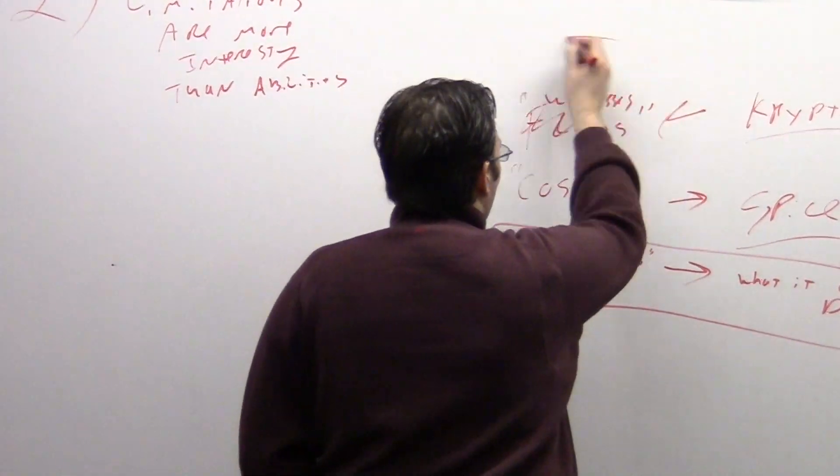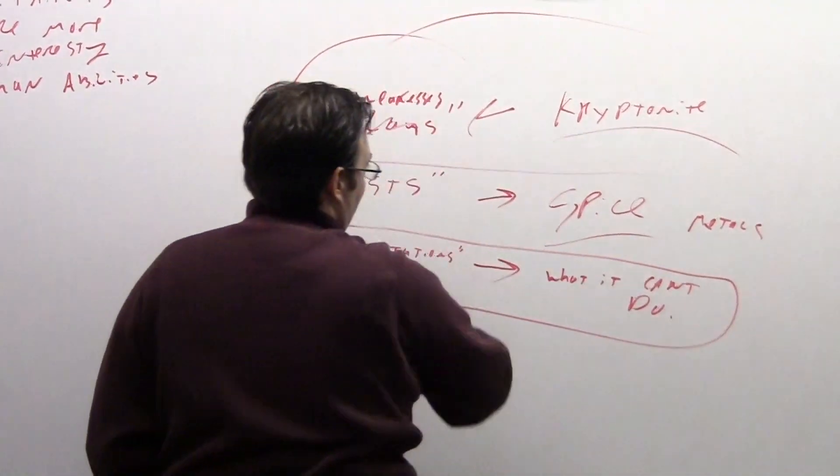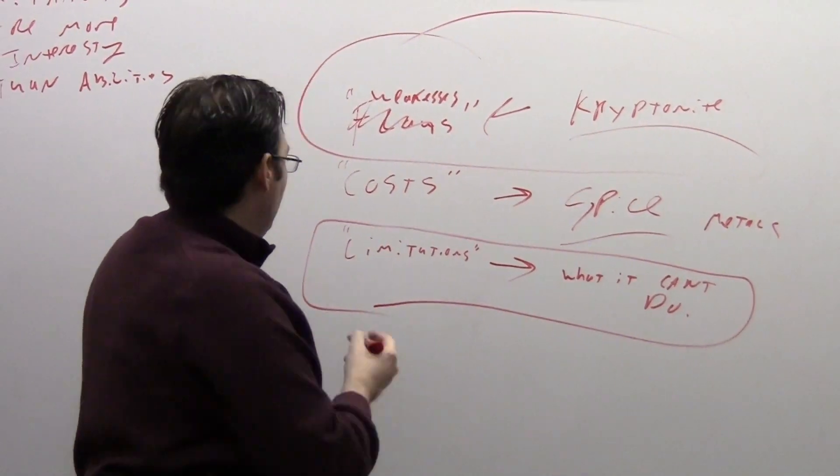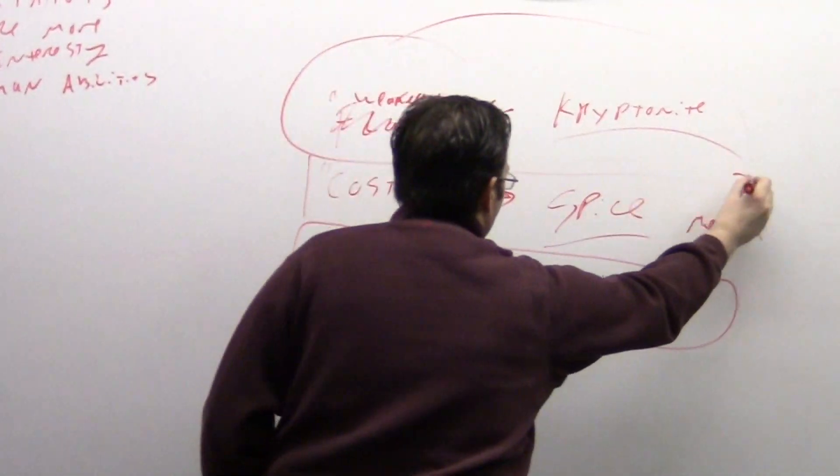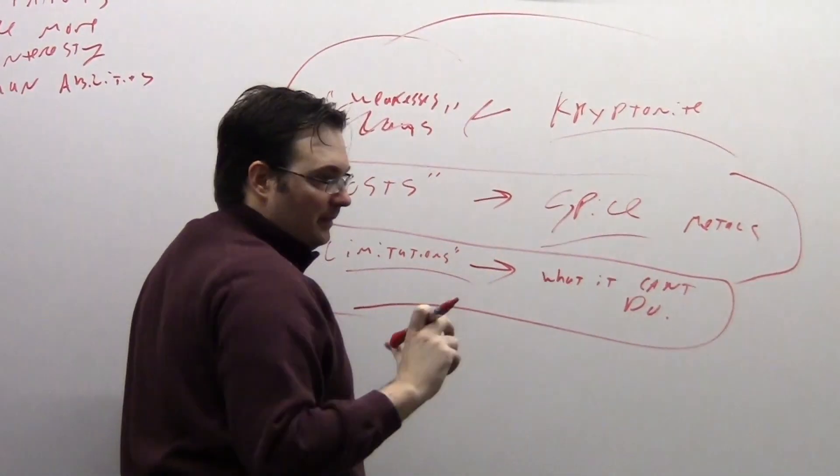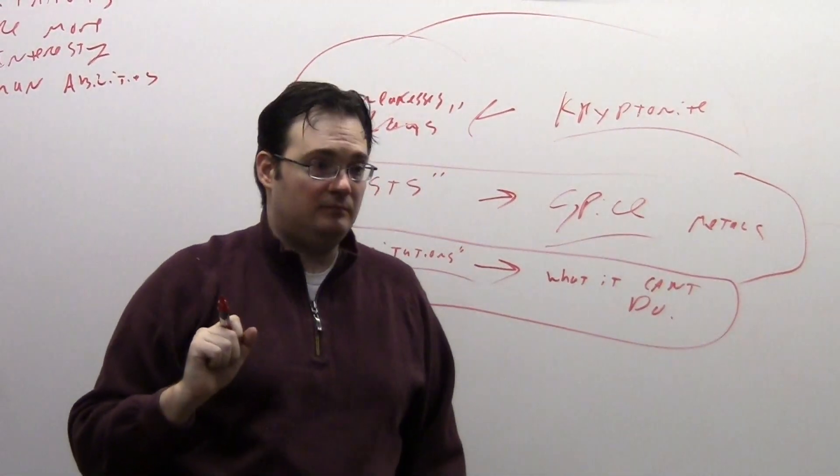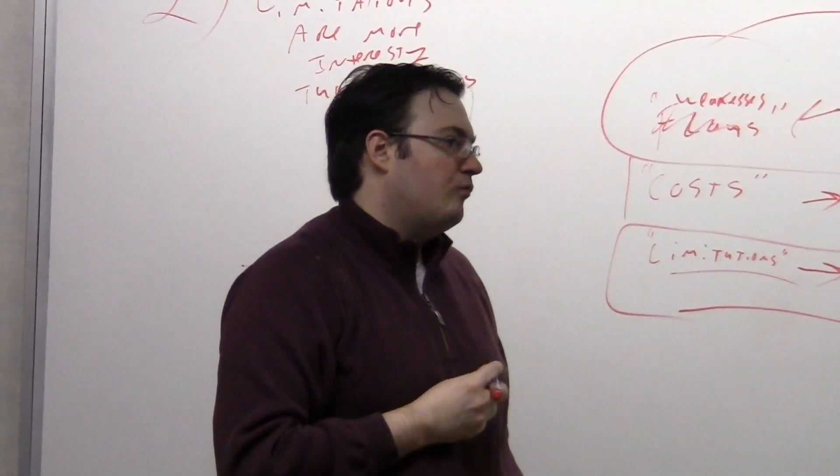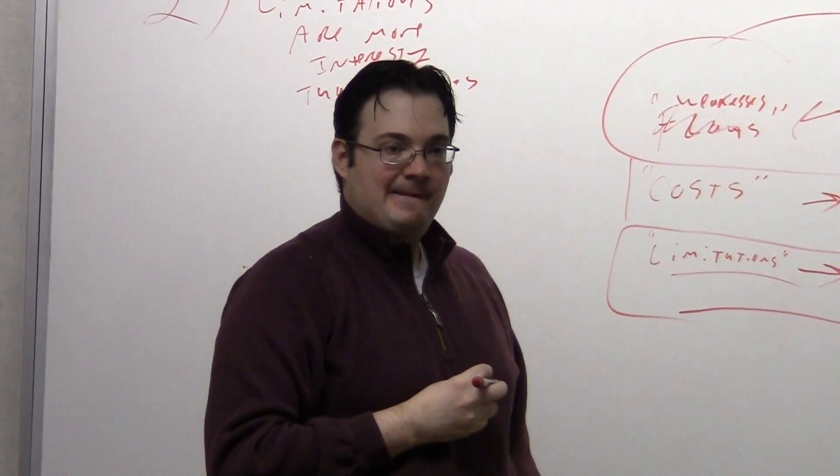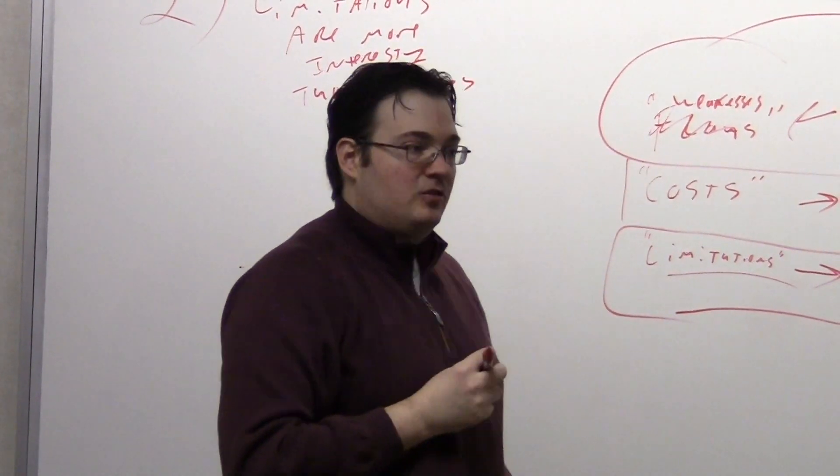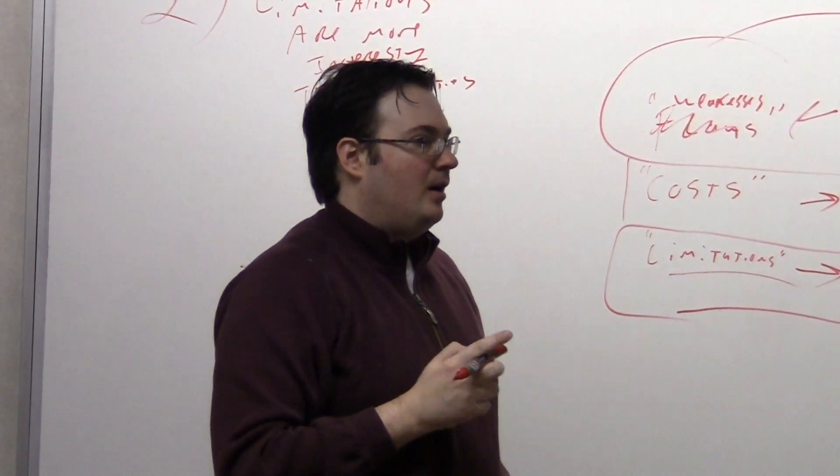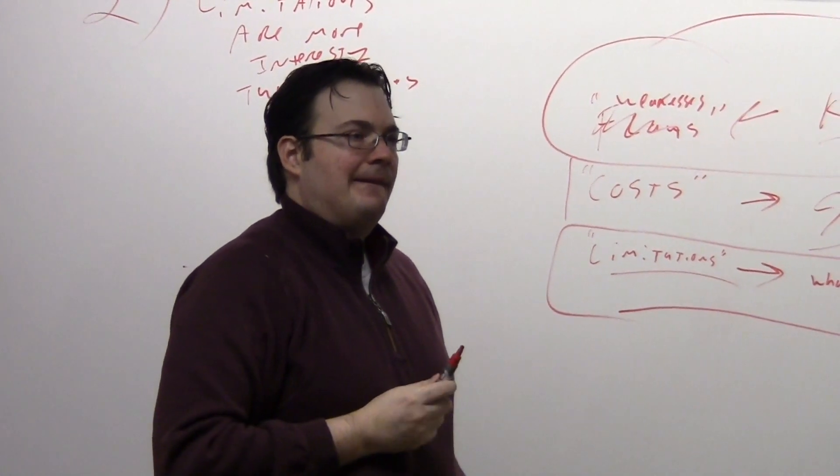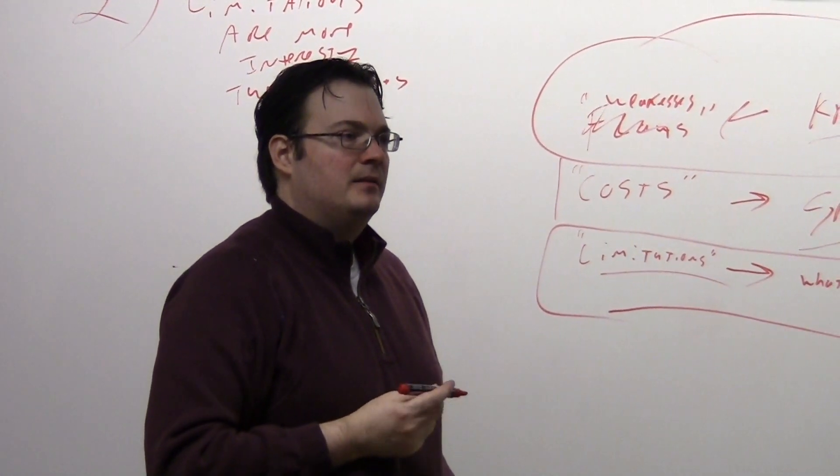Of the three, this one's actually, I think, probably the least interesting. But it still works. I think that the most interesting are the right limitations. Using the right limitations can really make your magic system shine. Using the right costs can too, but costs can be really tough to get the balance right.